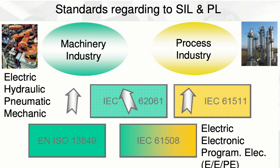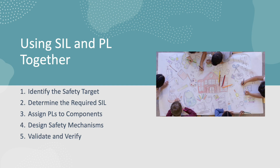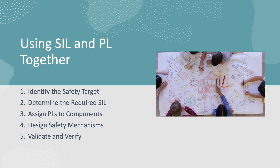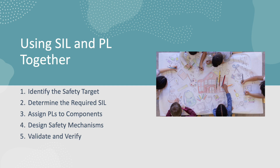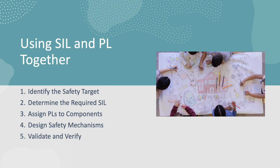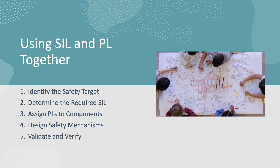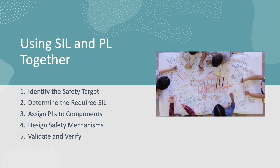To combine these two standards, first determine your safety target — what you want to achieve. Then determine the required safety integrity level based on risk assessment. Determine the total SIL for the machinery, then assign the performance level for each individual component. Then design the safety mechanism, and finally validate and verify the combined safety integrity level and performance level.